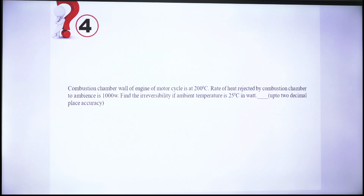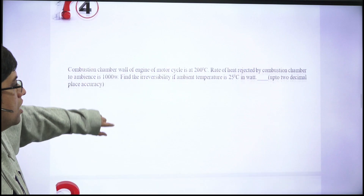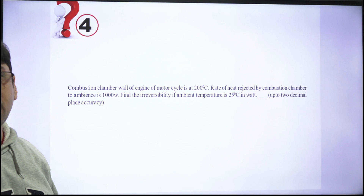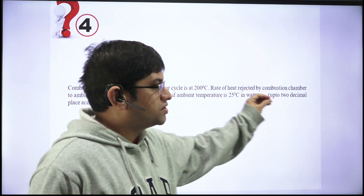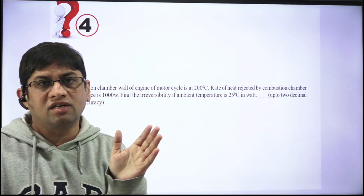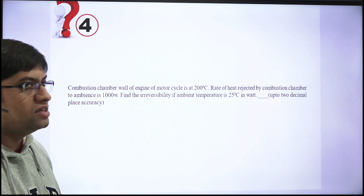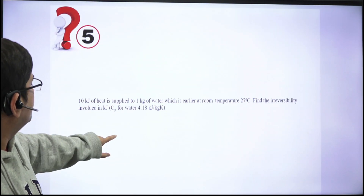Question 4: The combustion chamber wall of a motorcycle engine is maintained at 200°C, and the rate of heat rejected by the combustion chamber to the ambience is 1000 W. You have to find the irreversibility in watts if the ambient temperature is 25°C. This is a high-temperature body at 200°C, from which heat flows to the ambience — find the irreversibility in that heat energy transfer.